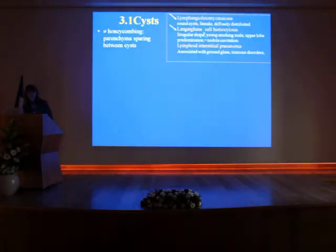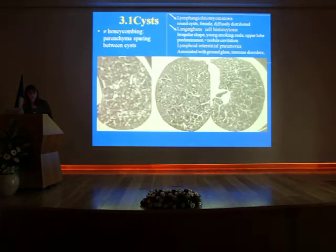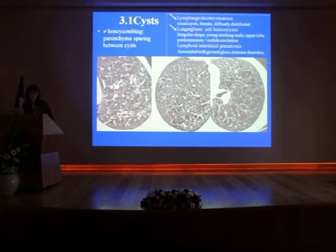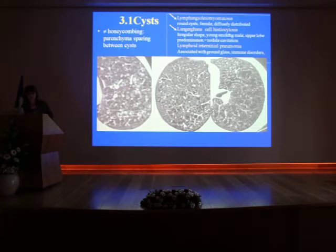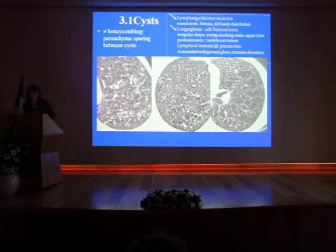The second disease is pulmonary Langerhans cell histiocytosis. The patients are different — they are men, usually young men, smokers. You will have cysts coexisting with nodules because the cysts are due to the cavitation of the nodules. Depending on the stage of the disease you will have only cysts, only nodules, or a mixed presentation. An important feature of Langerhans cell histiocytosis is its upper lobe predominance, which you don't have in lymphangioleiomyomatosis. The cysts also have a bizarre shape because they are due to coalescence of different cavities.